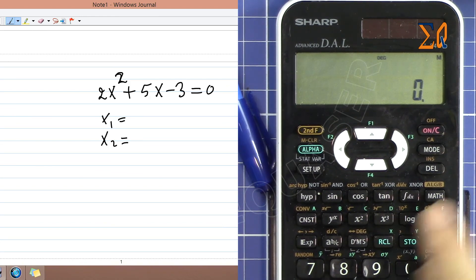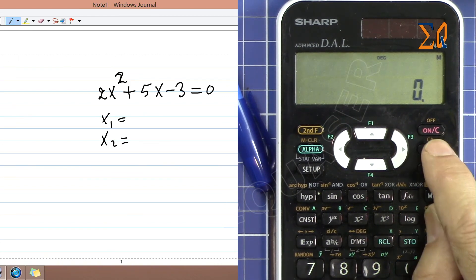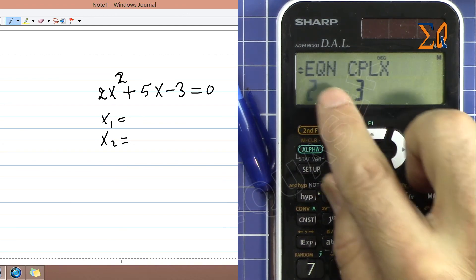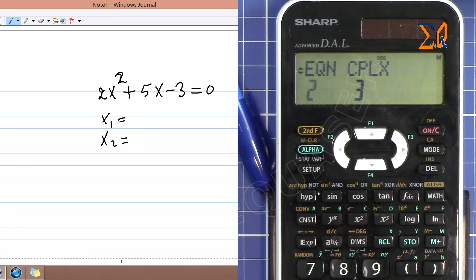To solve this, let's enter the equation. Press Mode and then scroll down, and here you see EQN. Now we press 2.